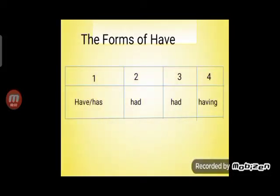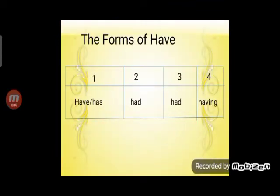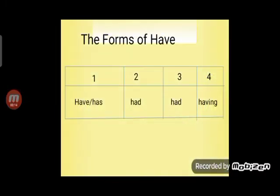Students, here are the four forms of have. As you can see, have has two first forms. They are 'have' and 'has'. The second and third forms are 'had', and the -ing form is 'having'.